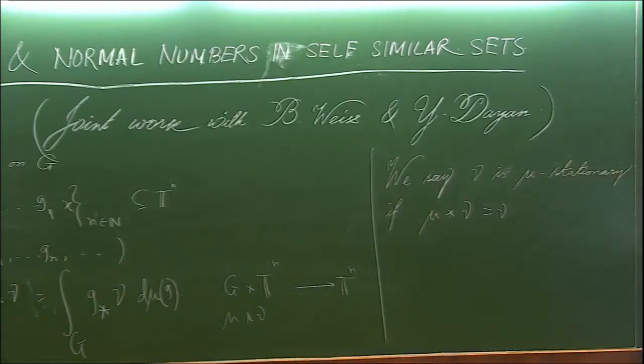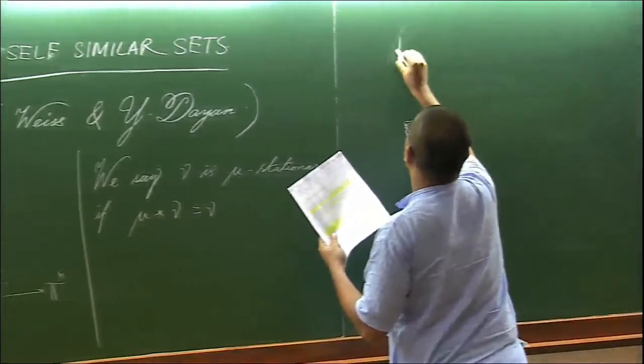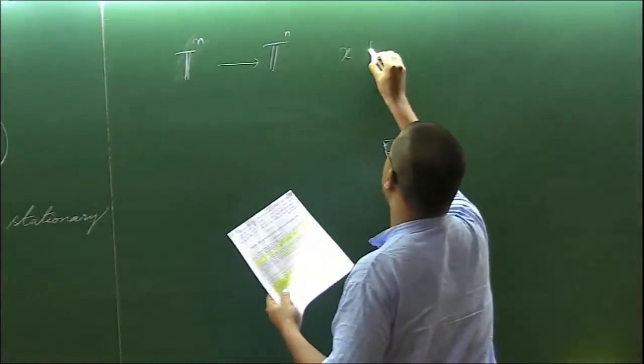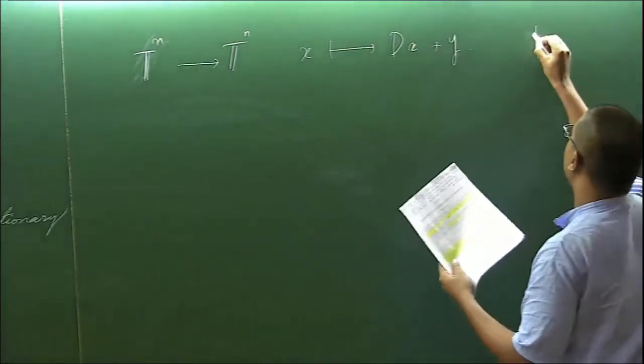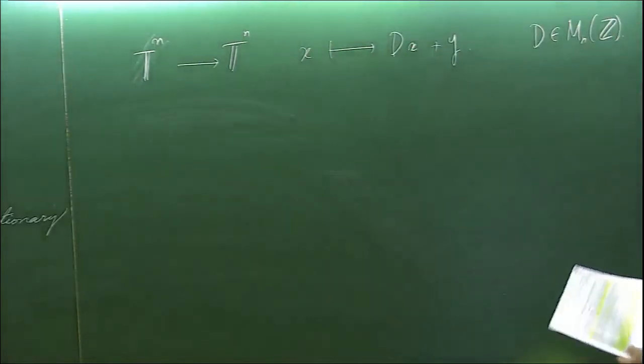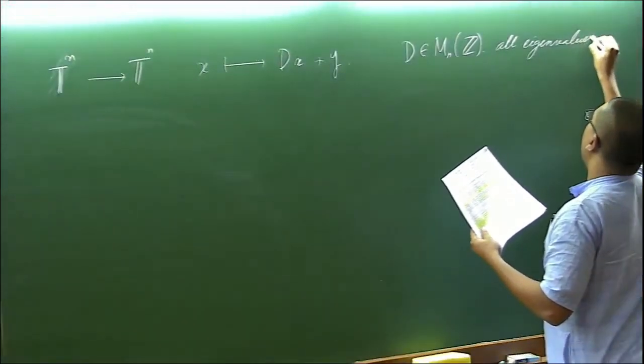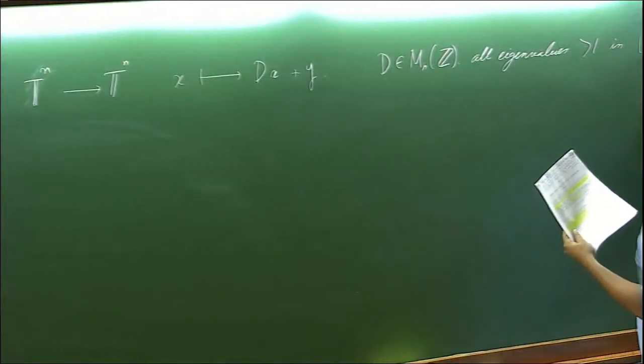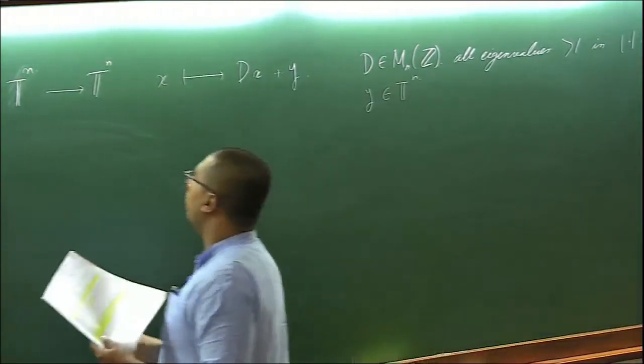In this talk we will be dealing with maps of this form, the affine transformations of the torus of the form x goes to Dx plus y, where D is an integer valued n cross n matrix with all eigenvalues greater than 1 in modulus and y is a vector in TN.